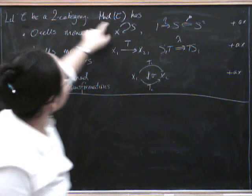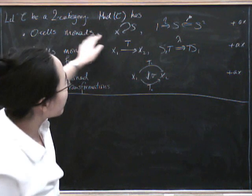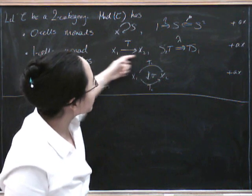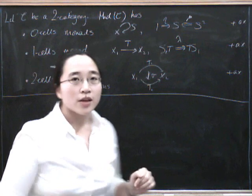Now, the two-category of monads inside C has, well, it's got the zero cells, which are the monads. So, that's a thing like this. The one cells are the monad functors, which are things like that. And the two cells are the monad transformations.